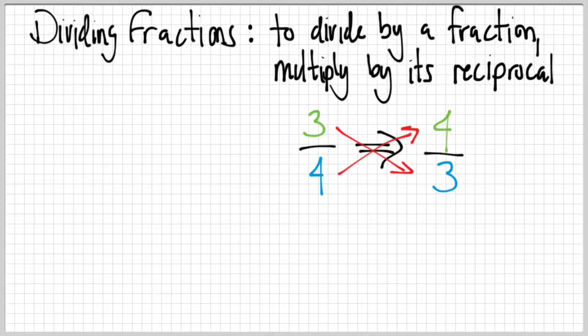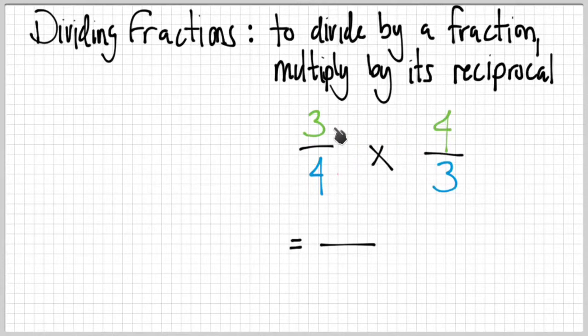One way to check that you have the correct reciprocal: multiply the number by its reciprocal and you always get one. So three times four is twelve, and four times three is also twelve — twelve over twelve is one. So if you multiply a number by its reciprocal, you always get one. That's a nice way to verify you got the correct reciprocal.